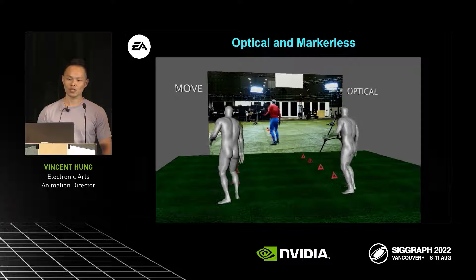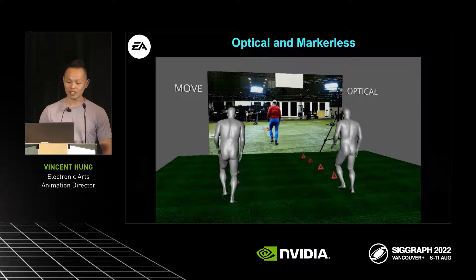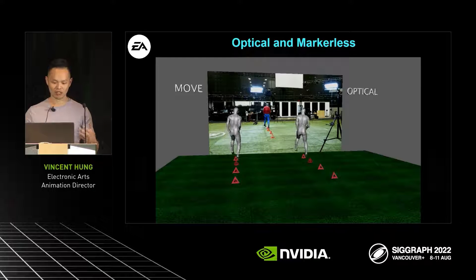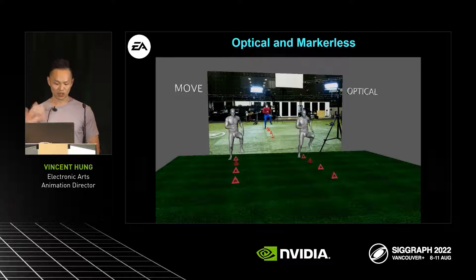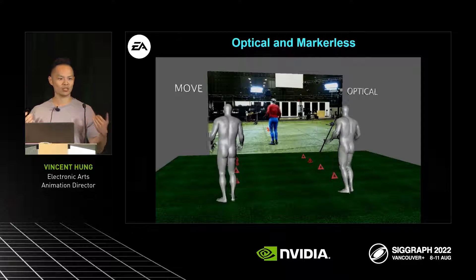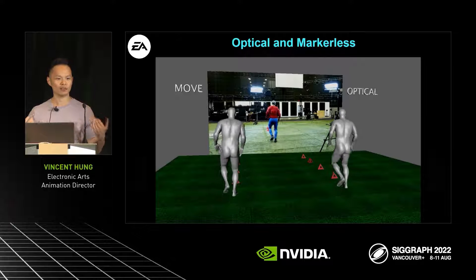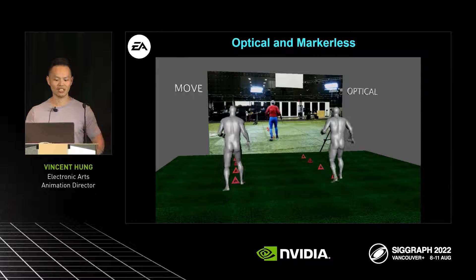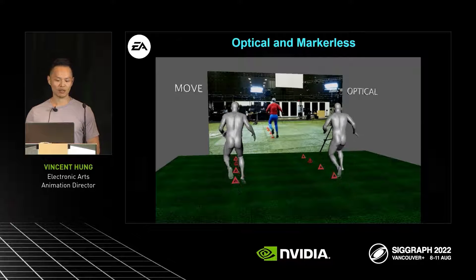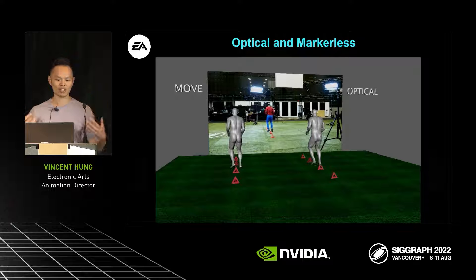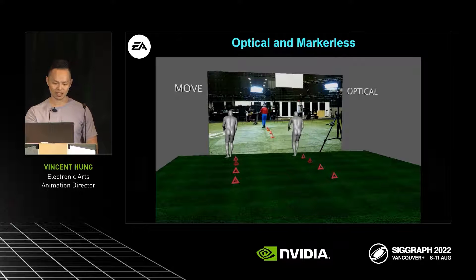We wanted to see how it would look on fast motions. The overall posture for the Move data — the shoulders are at a really good level. That's something I personally look at right off the bat: how is the shoulder level, because it really gives you a good sense of the animation and really drives that silhouette. So that posture is really good.